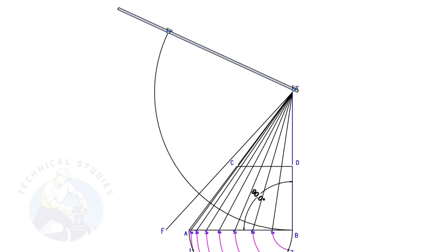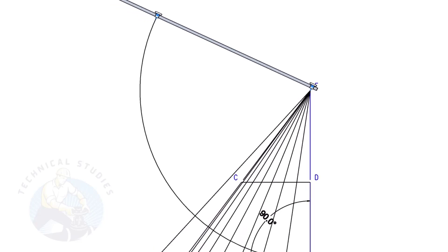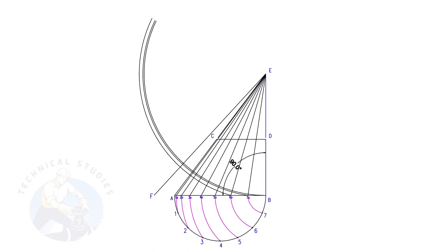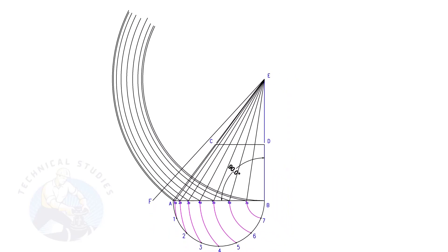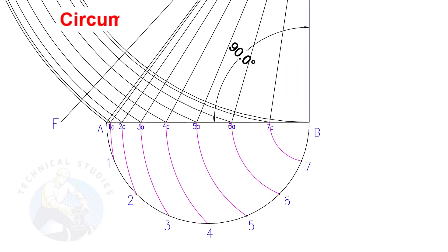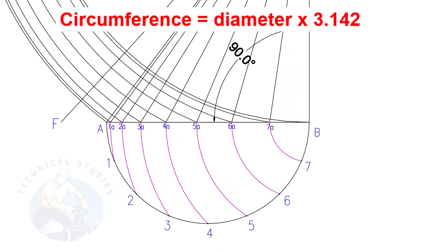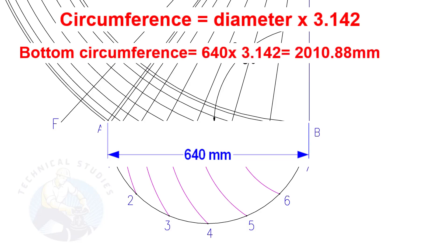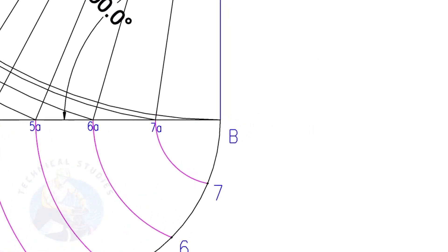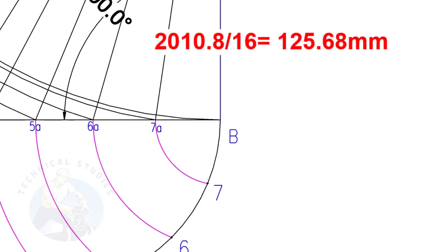Draw arcs EB, E7A, E7B, etc. Let us calculate the circumference of the bottom side. The formula is diameter multiplied by 3.142. Since the diameter is 640, multiply it by 3.142. The answer is 2010.8 mm. To calculate the arc length of one segment, divide the circumference 2010.8 by 16. The length of one arc is 125.68 mm.